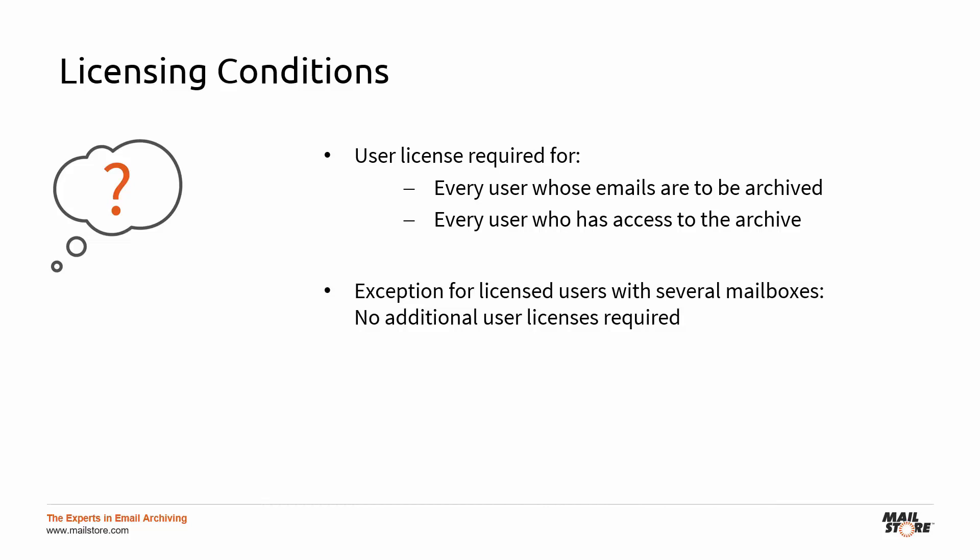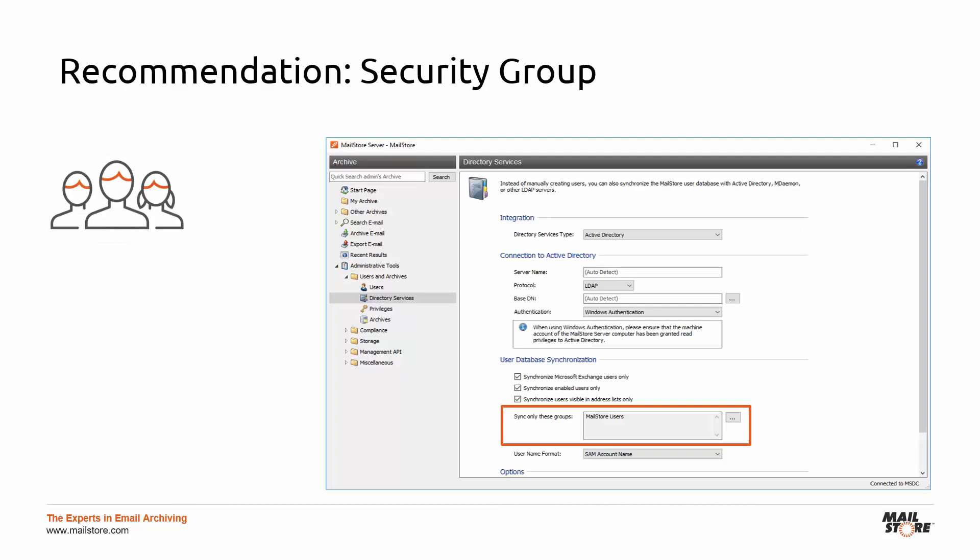But what exactly does this mean? It means that you don't have to license all the users on your Exchange Server or other provider's mail server. To make sure that Mailstore Server synchronizes only the users you really want, we advise you to create a global security group and add only those users that are going to be archived. If you synchronize Mailstore Server with this security group, only members of the group will be created as users, and in most cases, only these users will need to have a license.